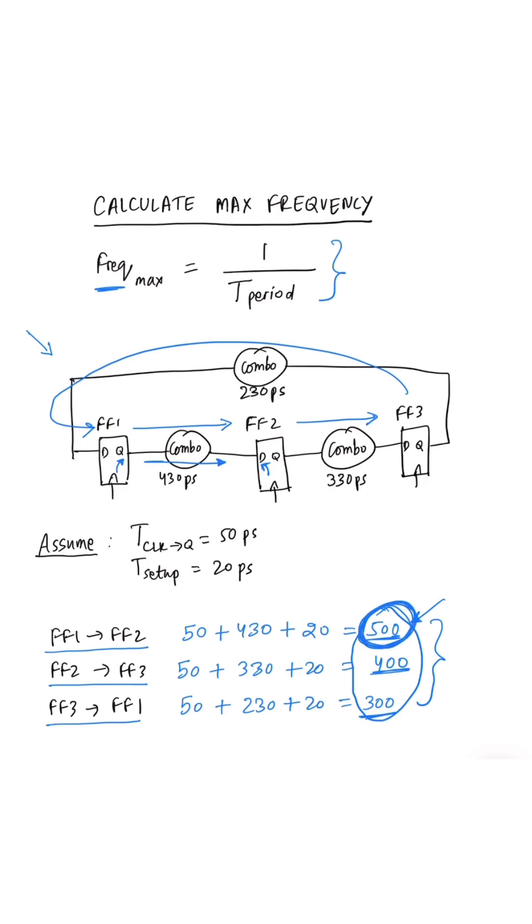To calculate the maximum frequency at which this design can operate, all we need to do is 1 divided by the clock period required for the slowest timing path, which is 500, and we get our maximum frequency, which is 2 GHz.